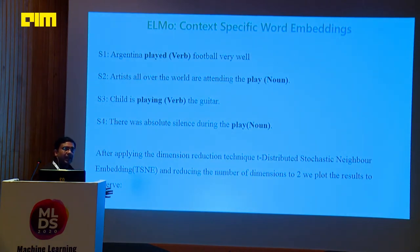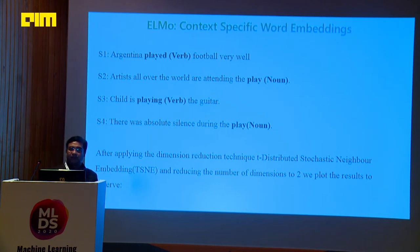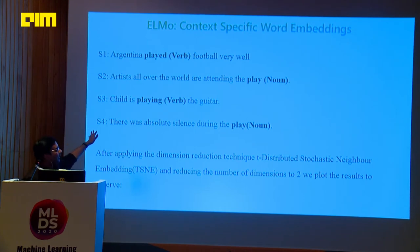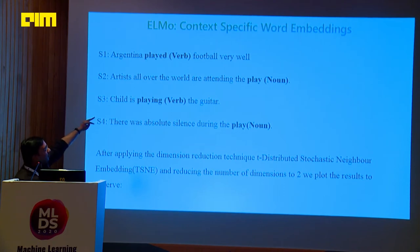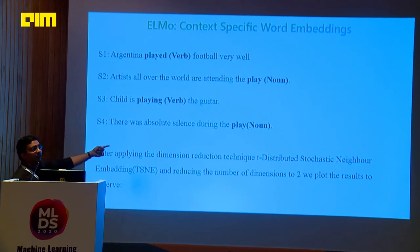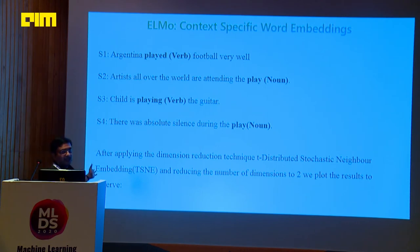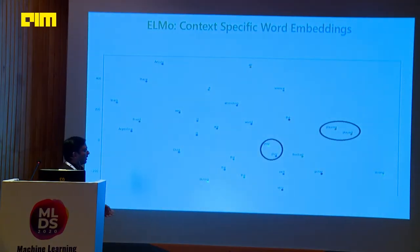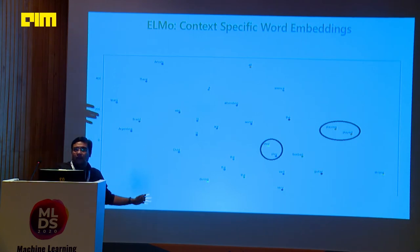Why ELMO? ELMO is a character-based embedding, but the embeddings are calculated at the word level. We average those word embeddings for each sentence, or if our answer is two or three sentences, we average all of them. Then we get one vector and calculate the cosine similarity. ELMO is so good that it can tell you the context of a verb versus a noun. For example, 'Argentina played football very well,' 'Artists all over the world are attending the play,' 'Child is playing the guitar,' and 'There was absolute silence during the play.' If you do a t-SNE and collapse into two dimensions, the two nouns 'play' are clustered at one place, whereas the verbs 'played' and 'playing' are clustered in a different place. That's why ELMO is called a context-based embedding.